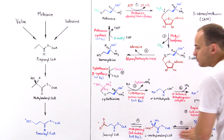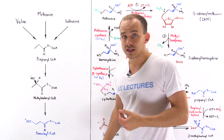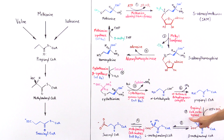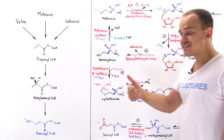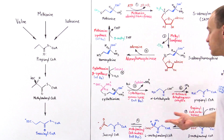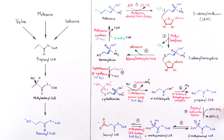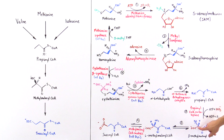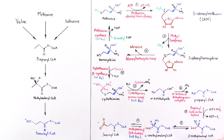Every step from propionyl coenzyme A onward is exactly the same as we discussed for the metabolism of odd-chain fatty acids. We take propionyl coenzyme A and the enzyme propionyl coenzyme A carboxylase — which requires biotin as a coenzyme and uses bicarbonate as the carbon source and ATP as the energy source — attaches a CO₂ group onto the carbon, and we form D-methylmalonyl coenzyme A.